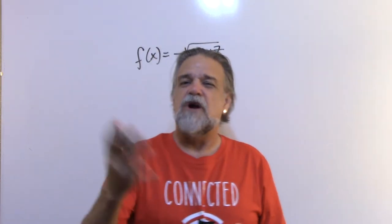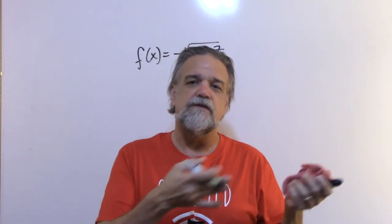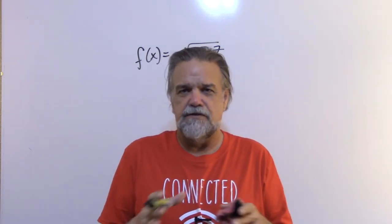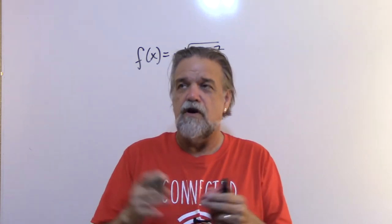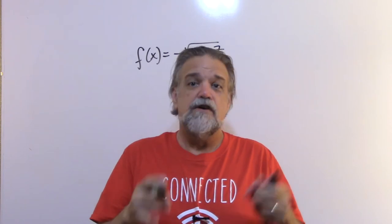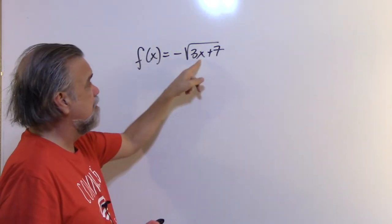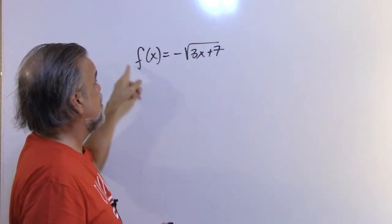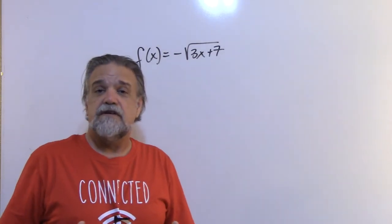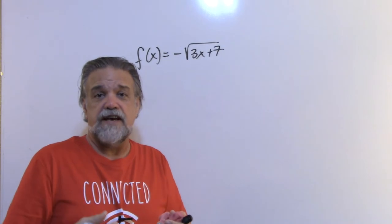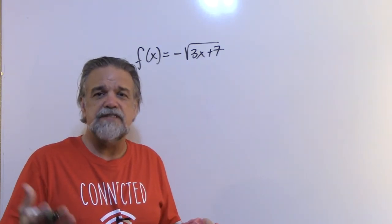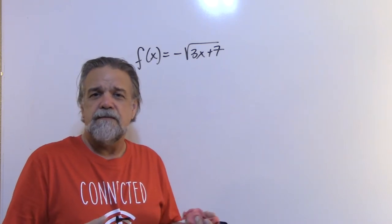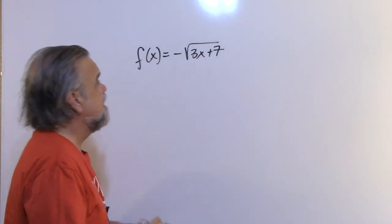The domain is all possible values the independent variable can take; the range is all possible values the dependent variable can take. When the domain is not explicitly defined, we have to infer it — that's an implicit domain. Instead of asking what x can be, it's easier to ask what x cannot be, because there are only a few rules in math that restrict values.